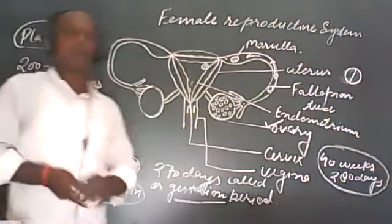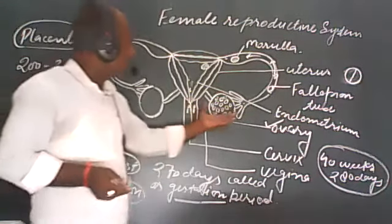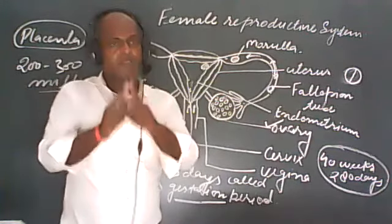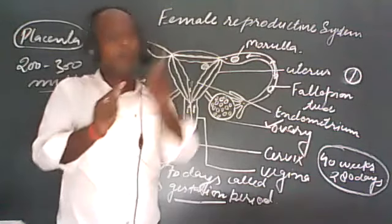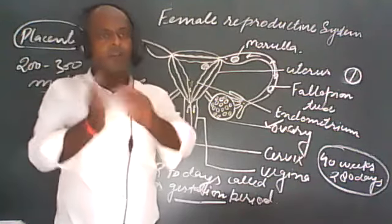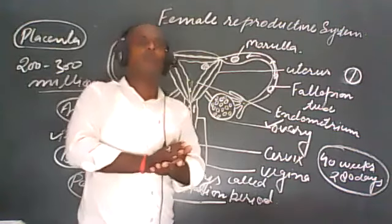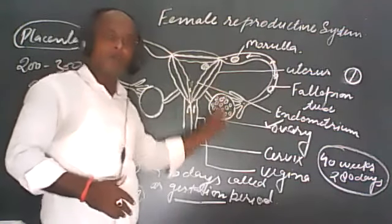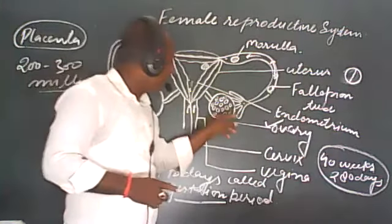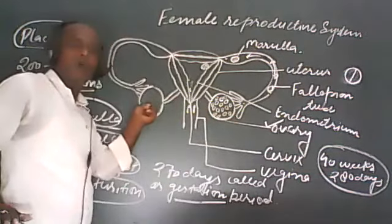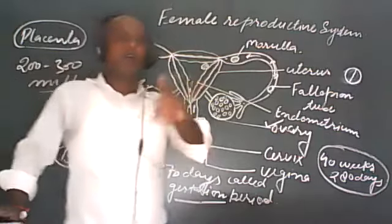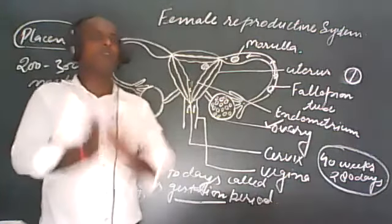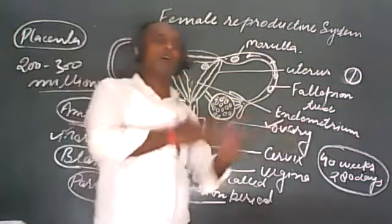To revise: ovulation means the releasing of ova — in one month there is releasing of one ovum, and in alternate months there is releasing of an ovum from alternate ovaries. There is a time when the ovaries stop releasing the ovum — there is no more ovulation after a particular time period.